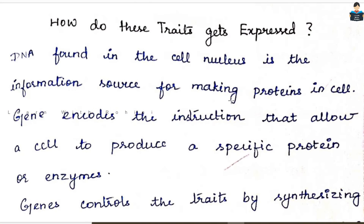Hello everyone, welcome to our channel. In this video, Chapter 9: Heredity and Evolution. In this lesson, we will talk about how traits get expressed — the characters we are looking for. Mono-hybrid characters, we examine the garden pea plant. Dihybrid cross — seed color and shape — we examine two characters.